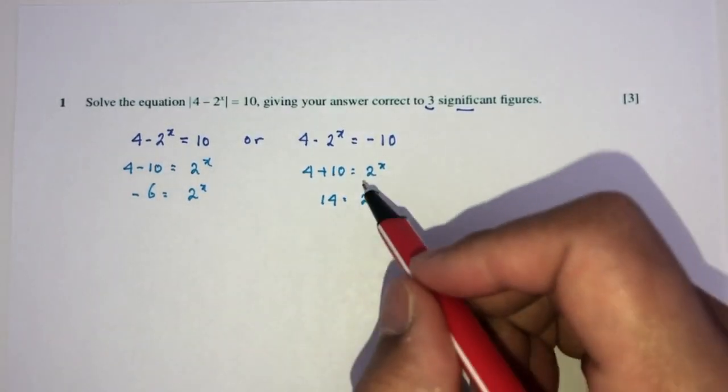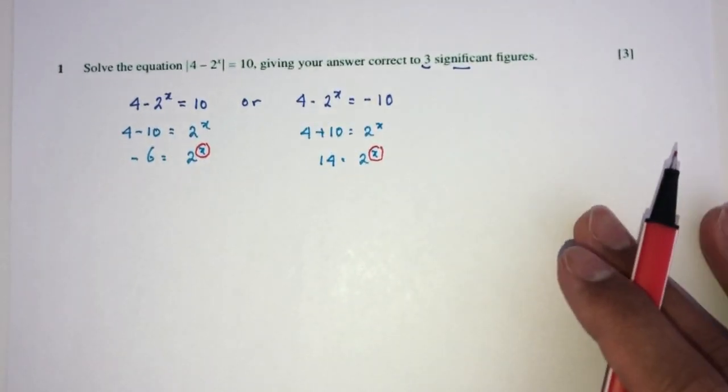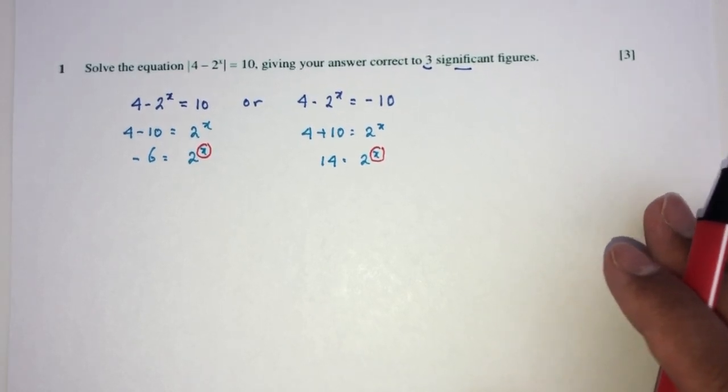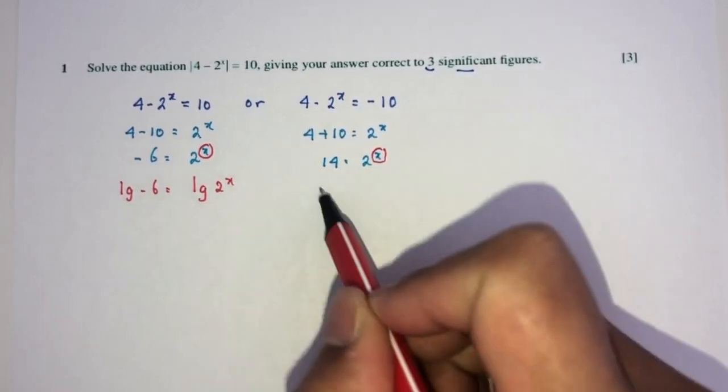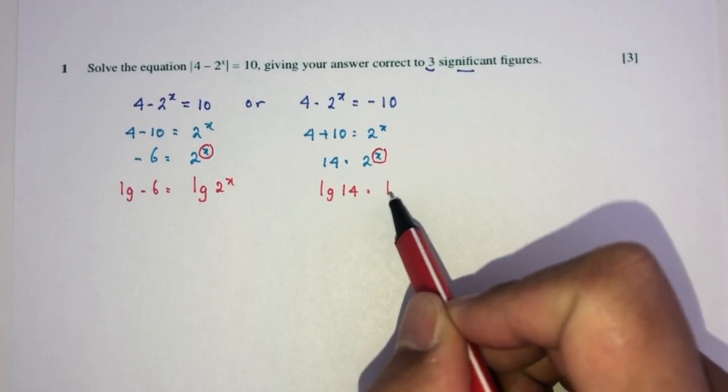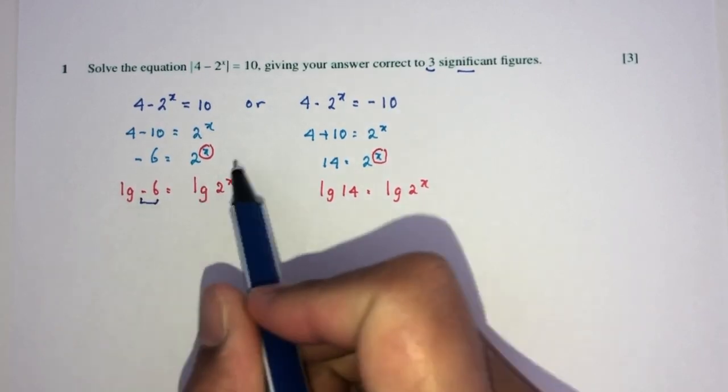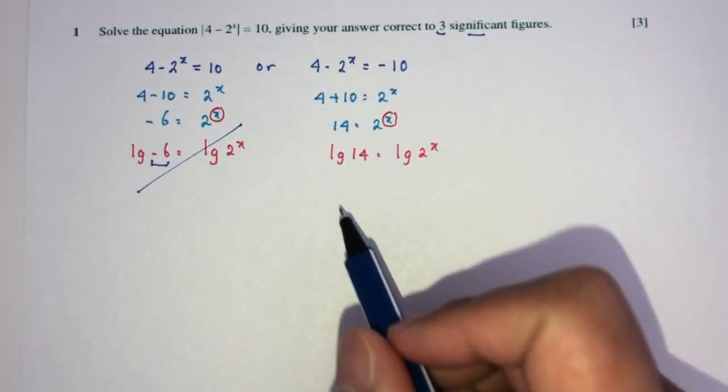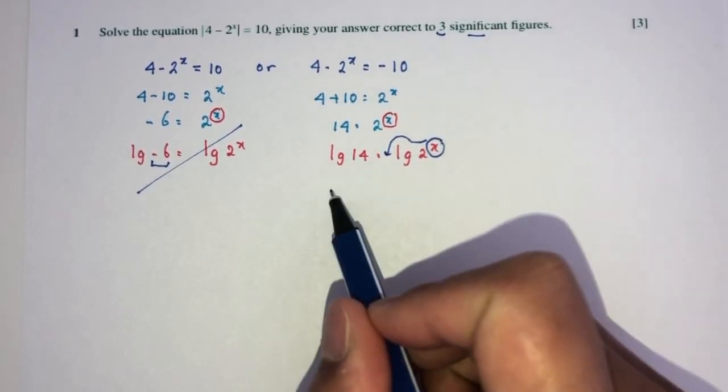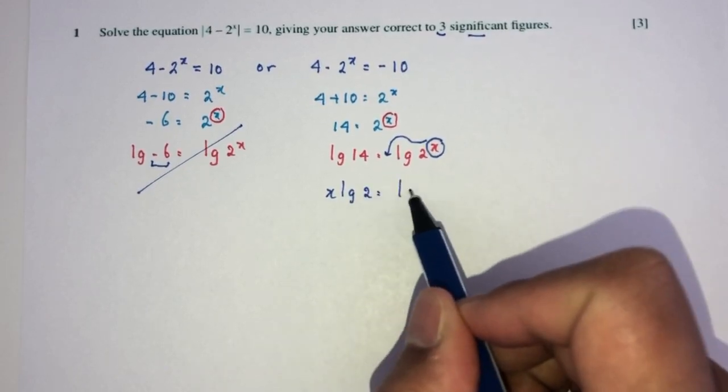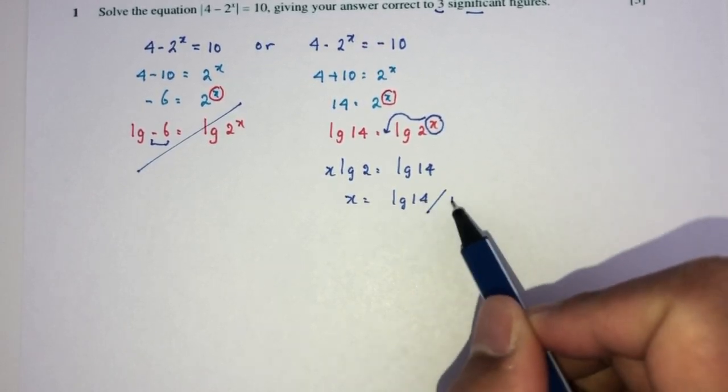As you can see, x is as a power here. It is in terms of a power, so we want to bring it down. To bring it down, we have to apply log or ln on both sides. You can choose either one in this case. I will choose log on both sides. Same thing over here as well. But you can see clearly, log cannot take a negative value, so this will not be valid. By the laws of logarithms, I can bring this down. Here you will have x log of 2 equals log of 14. So finally, x equals log of 14 divided by log of 2.